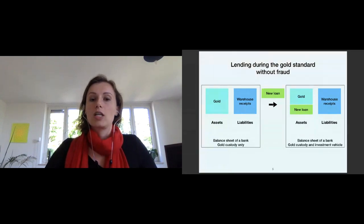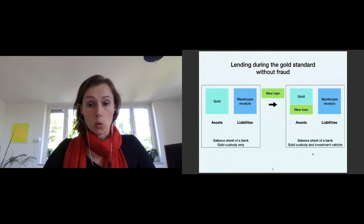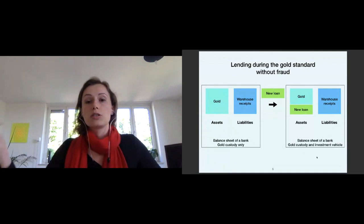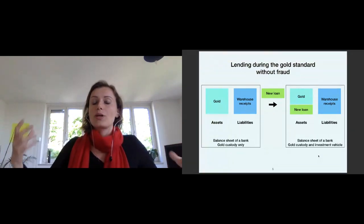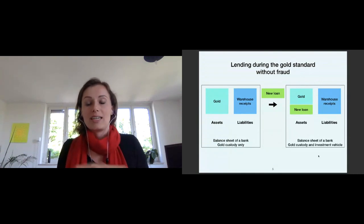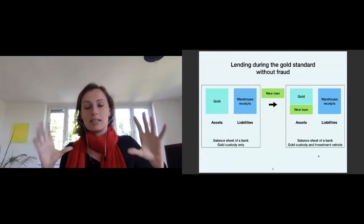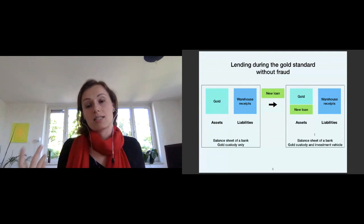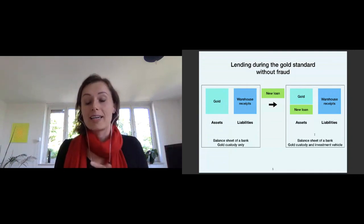What happens when a loan is given out? The bank is then not only operating as a gold custody anymore but also as an investment vehicle. It is giving out gold to the one borrowing, and this influences those who gave gold to the bank in the first place. Essentially, those holding warehouse receipts are investors in an investment fund. If an investment fund does business honestly, they should consult with investors and explain the risk of the loan — that's how it would work in an ideal case.